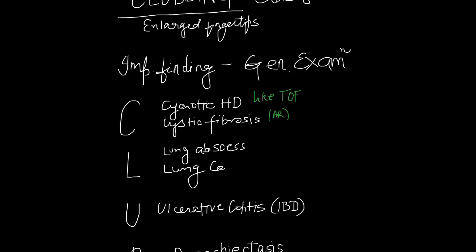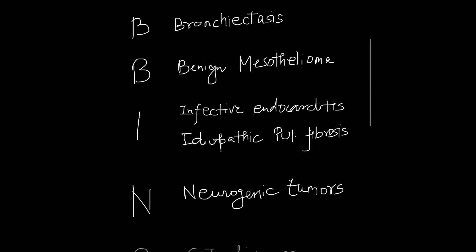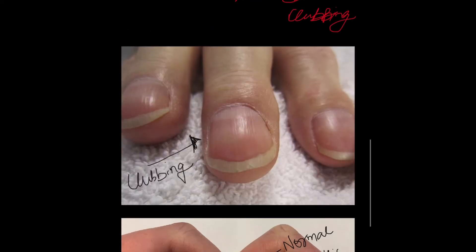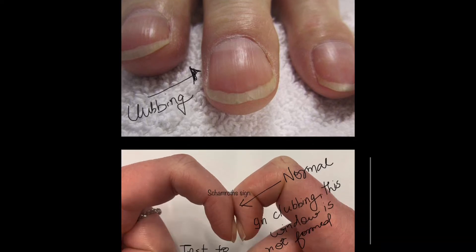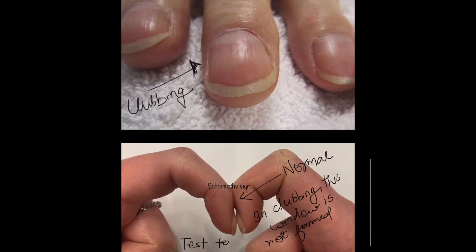Today's topic is clubbing. We will study the causes of clubbing. Firstly, what is clubbing? Clubbing is the enlarged fingertips — as you can see in the picture, the fingertips get enlarged. It is an important sign of various systemic diseases to look for in general examination.